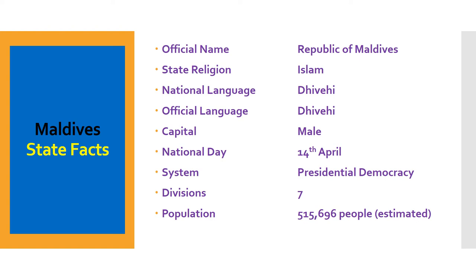Official name: Republic of Maldives. State religion: Islam. National language: Dhivehi. Official language: Dhivehi. Capital: Malé. National day: 14th April. System: presidential democracy. Divisions: 7. Population: 515,696 people, estimated.